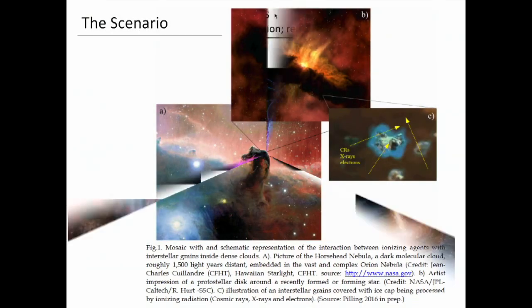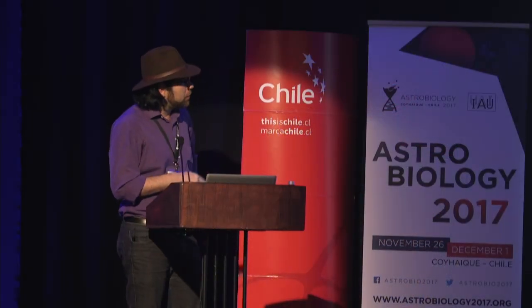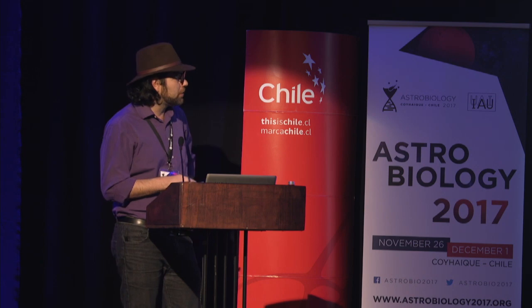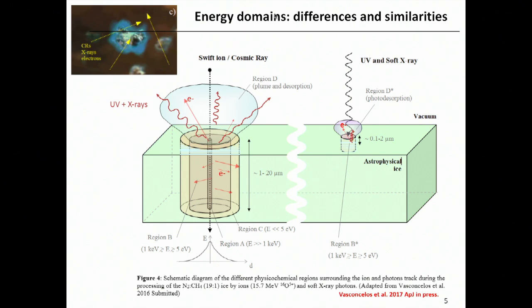These pictures represent the sources of X-rays and cosmic rays that are known: supernovae, pulsars, protostars, black holes, and AGNs, all of these. Now I will move to these slides just to show you some differences and similarities between what happens when those ionizing agents interact with matter.